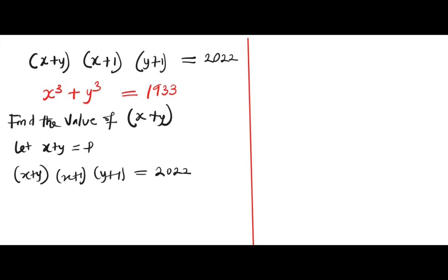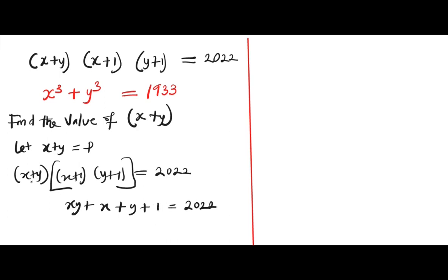Let's expand the bracket x plus 1 times y plus 1. So we are going to have x times y, plus x, plus y, plus x times 1, plus 1 times y, plus 1 times 1, which gives us 1. So altogether that equals 2022, and remember we still have our x plus y here.